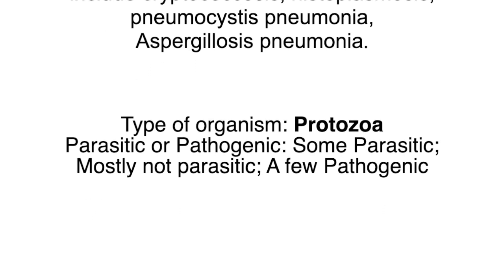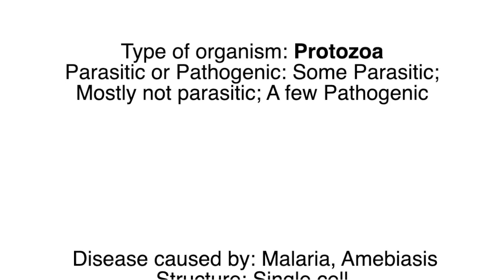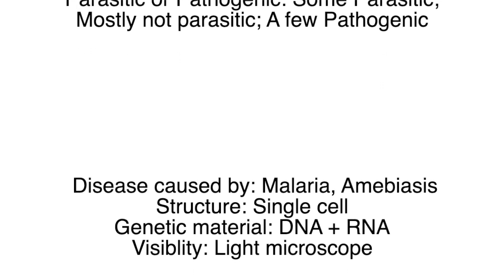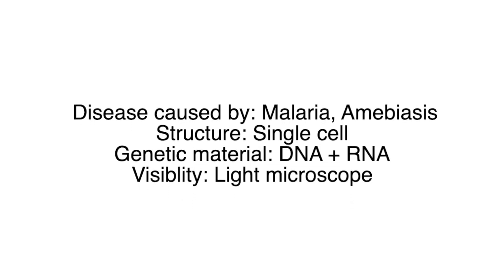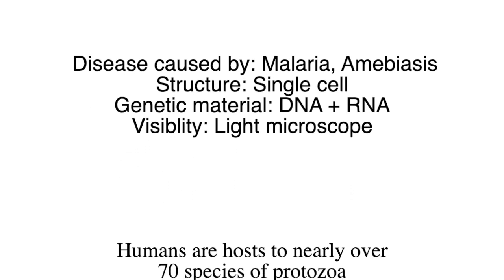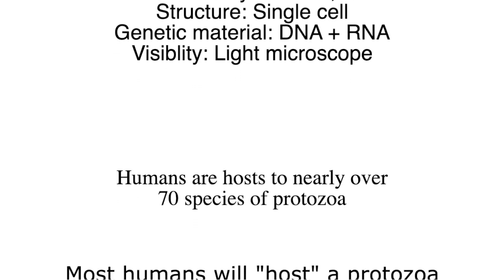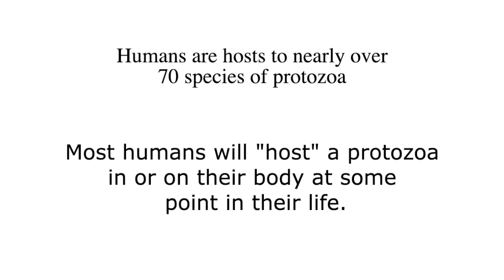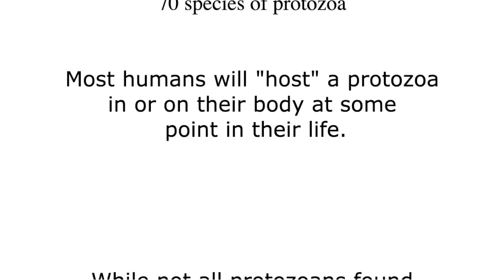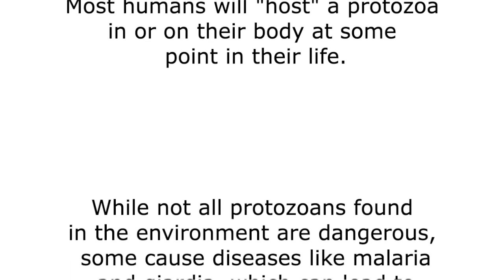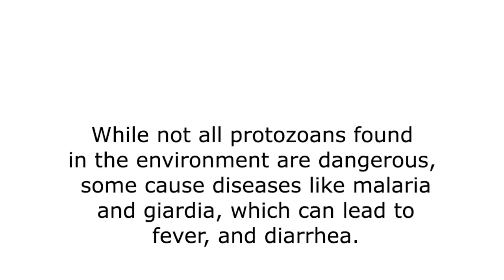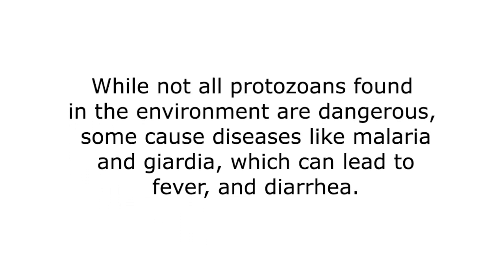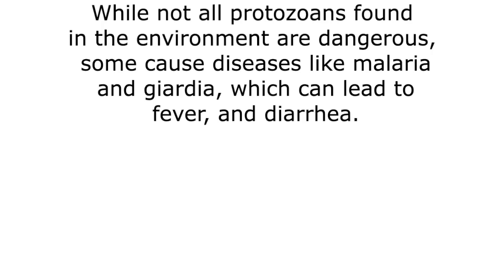Type of organism: protozoa — some parasitic, mostly not parasitic, a few pathogenic. Diseases caused include malaria and amoebiasis. Protozoa are single-celled with DNA and RNA, visible by light microscopy. Humans are host to nearly 70 species of protozoa, and most humans will host a protozoan in or on their body at some point in their life. While not all protozoans in the environment are dangerous, some cause disease like malaria and giardia, which can lead to fever and diarrhoea.